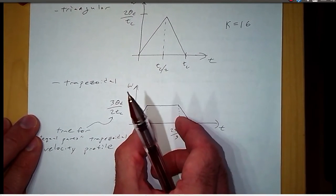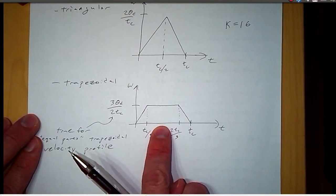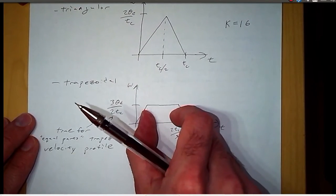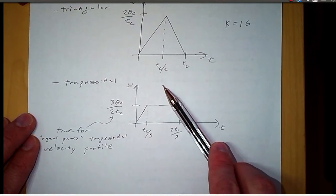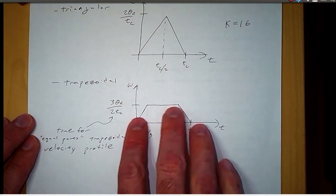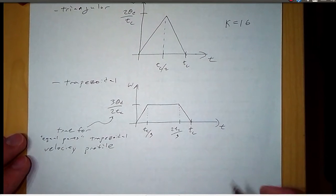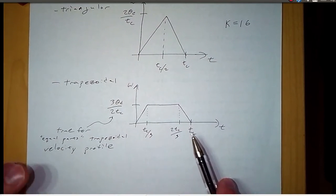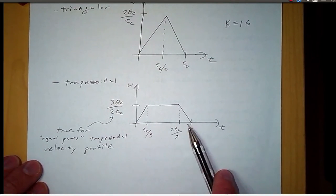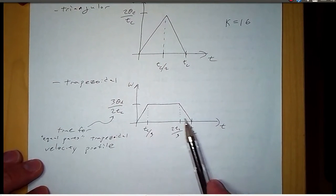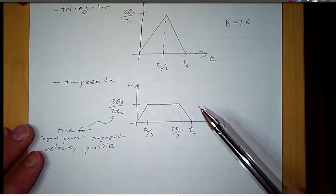So you could see if, for example, we were to shorten this time here where we have a constant velocity, that the maximum speed would increase because the area under this curve needs to stay the same. Because the area under the curve is theta d. If you integrate velocity over time, you get displacement. So the area under the curve is the displacement theta d.